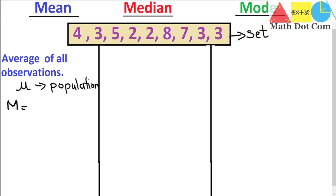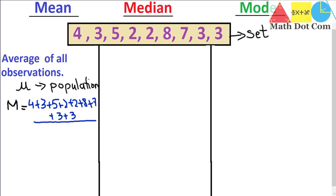You just need to add all the values one by one together. So it will be: 4 + 3 + 5 + 2 + 2 + 2 + 8 + 7 + 3 + 3. These are the values from the given data set, divided by the count — the number of values in the data set, which is 9. So M equals 4.11.